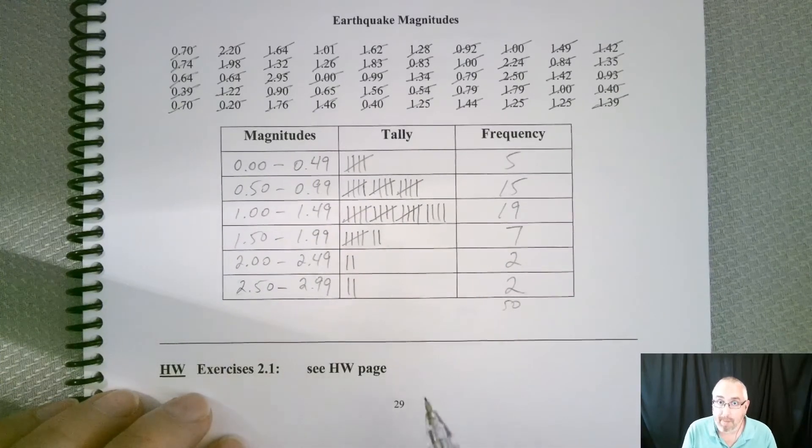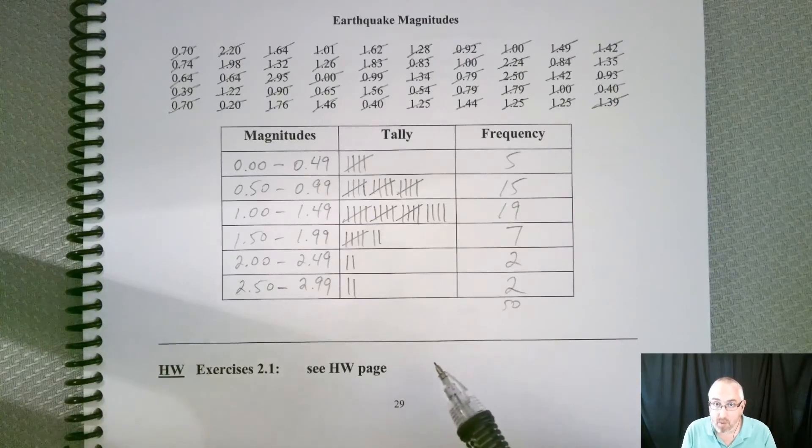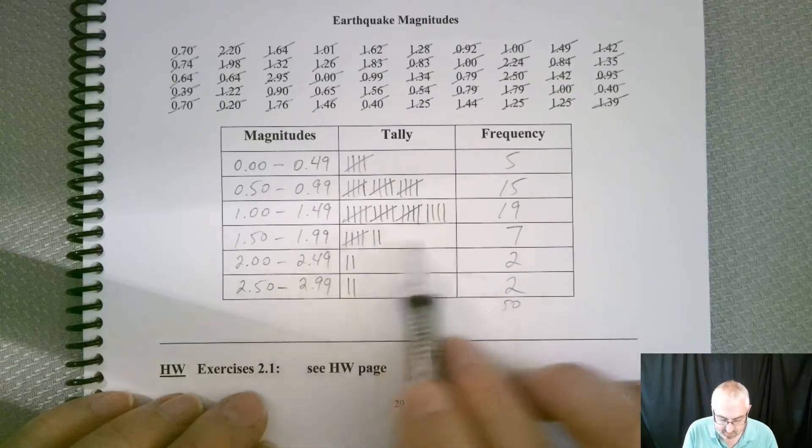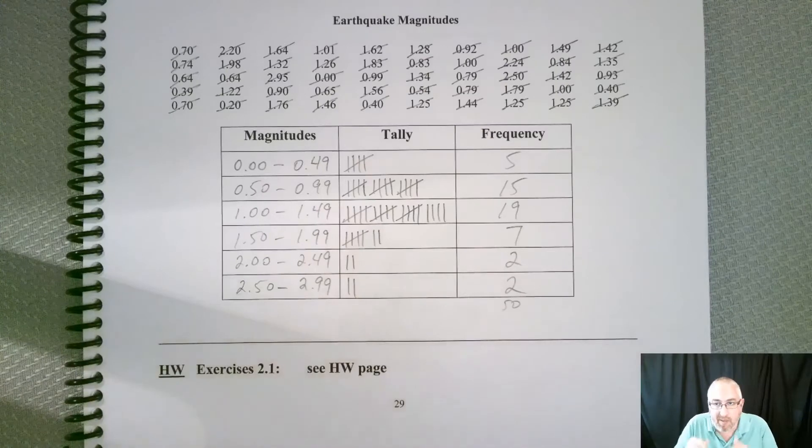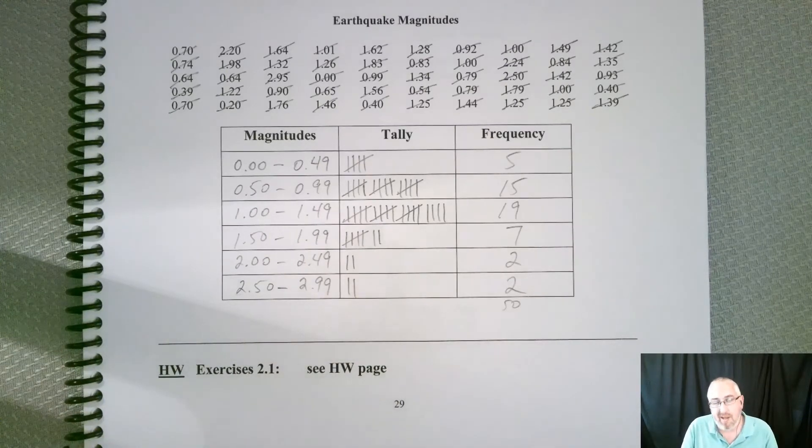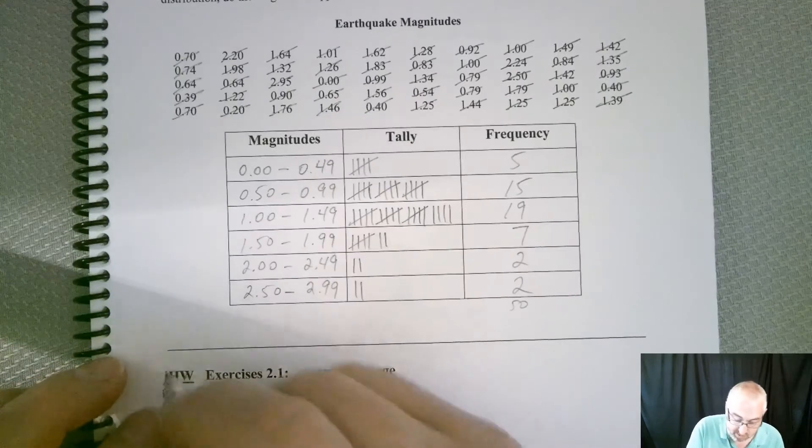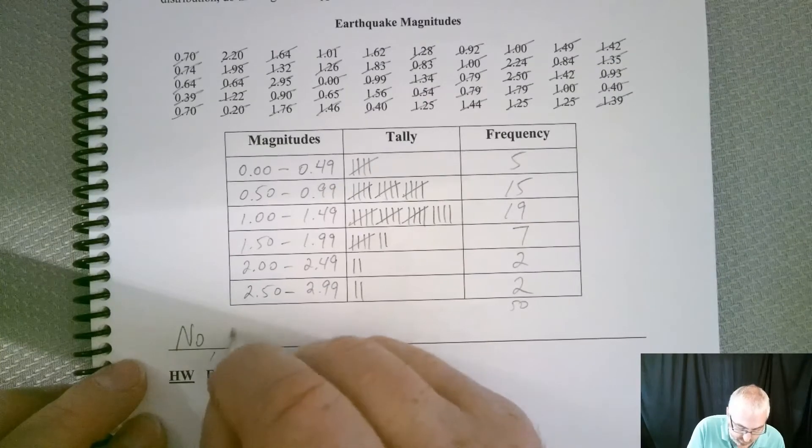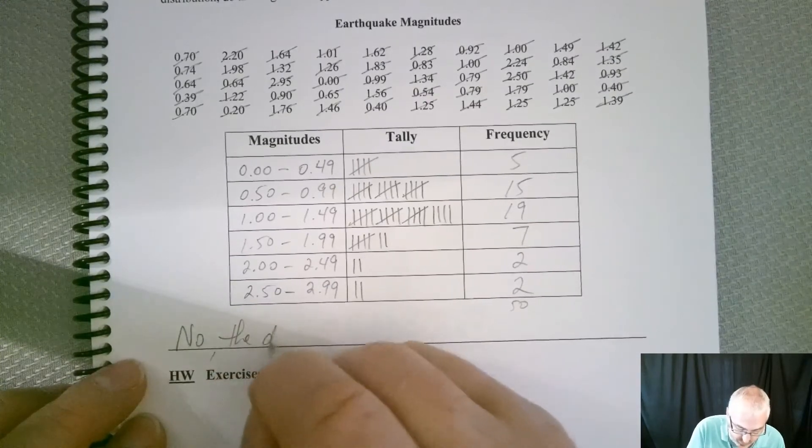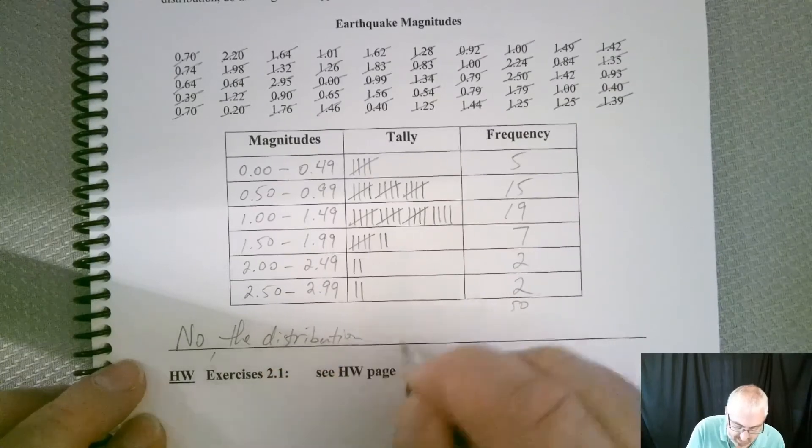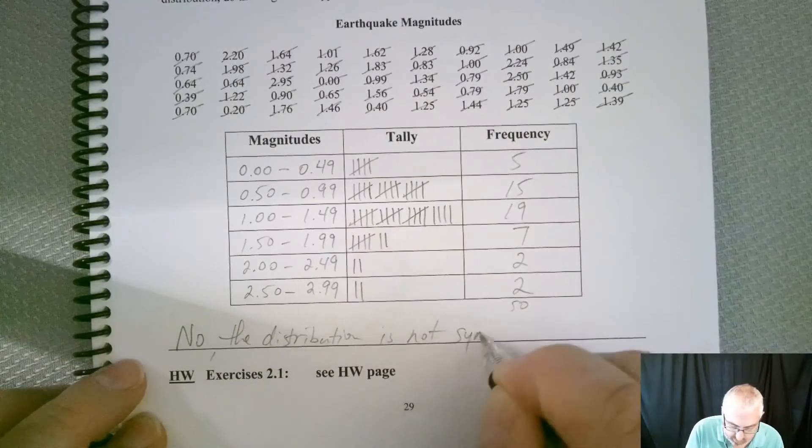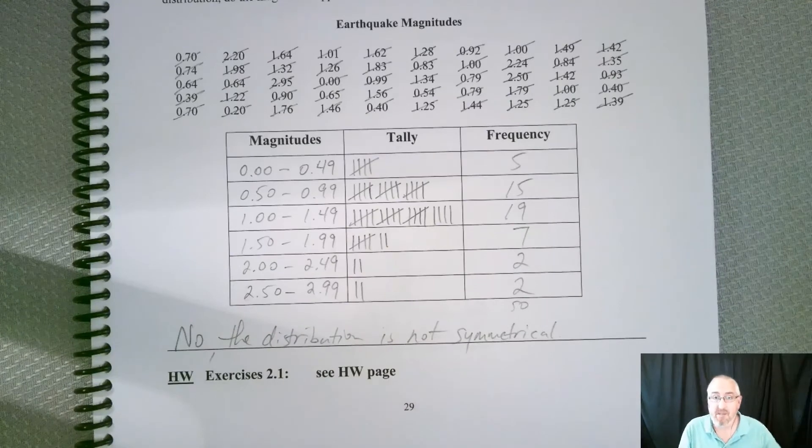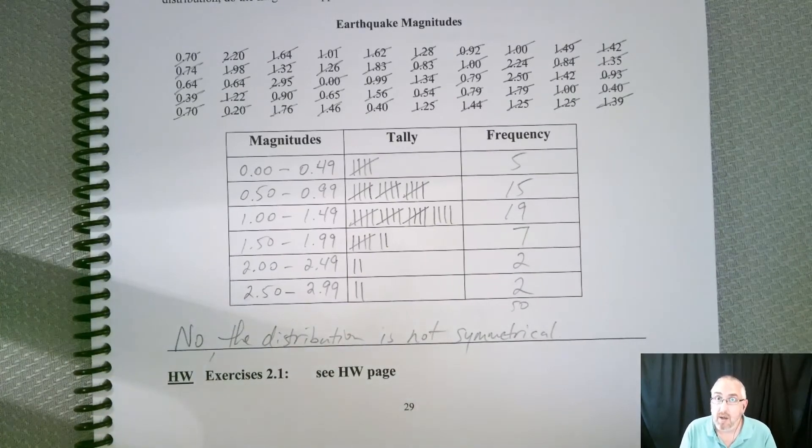But the second one's not met. Is it a mirror image from one side to the other? No, it's not. So we would need to have these two in the middle be closer to the same height, and then the other two kind of taper off evenly. And we don't quite have that. So, is the answer yes or no? We should say no. The distribution is not symmetrical. So, even though it goes up and comes down, it's not symmetrical.